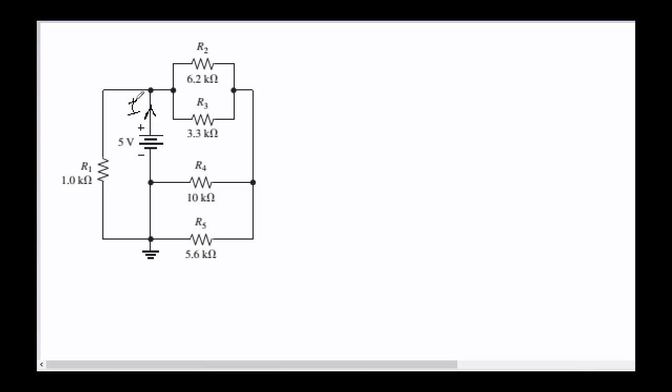In this branch there is one current — I will call it I total. Then I total is going to split and give us I1 here, I2 here, and I3 here. Note that this point and this point are the same point, so I total is coming to this point and splitting into I2, I3, and I1.